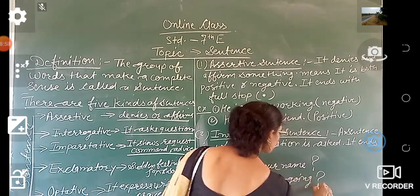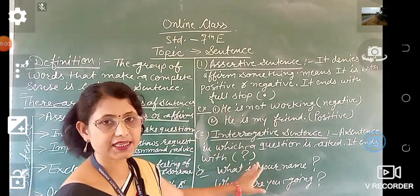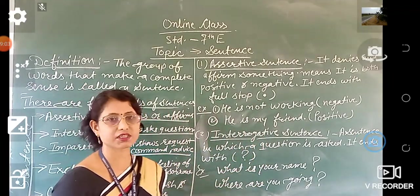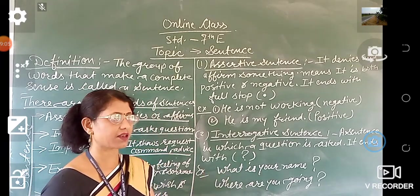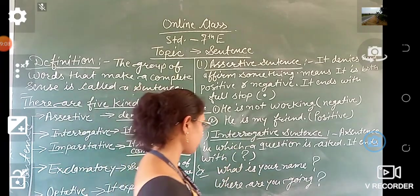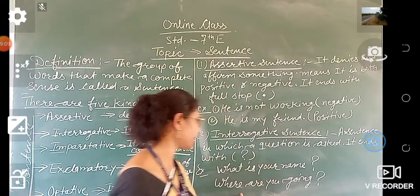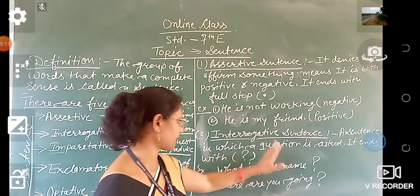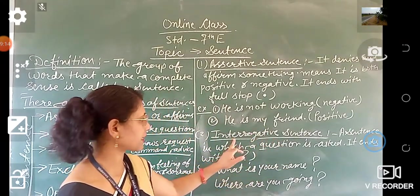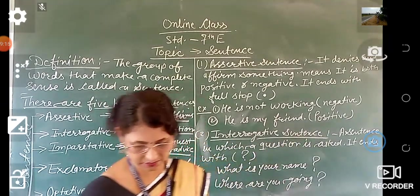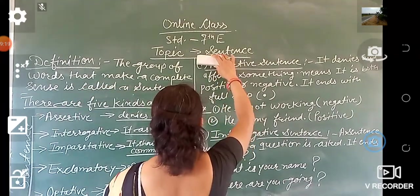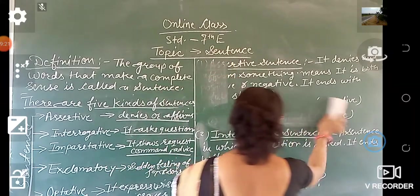Interrogative sentences start with question words like what, when, where, whom, etc., and end with a question mark. Such a sentence is called an interrogative sentence.